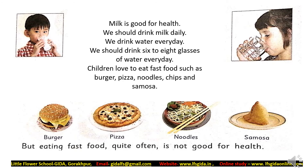Next is fast food. Children love to eat fast food such as burgers, pizza, noodles, and samosa. But eating fast food is not good for health. Eating a lot of junk food leads to conditions like obesity, acidity, and so on.